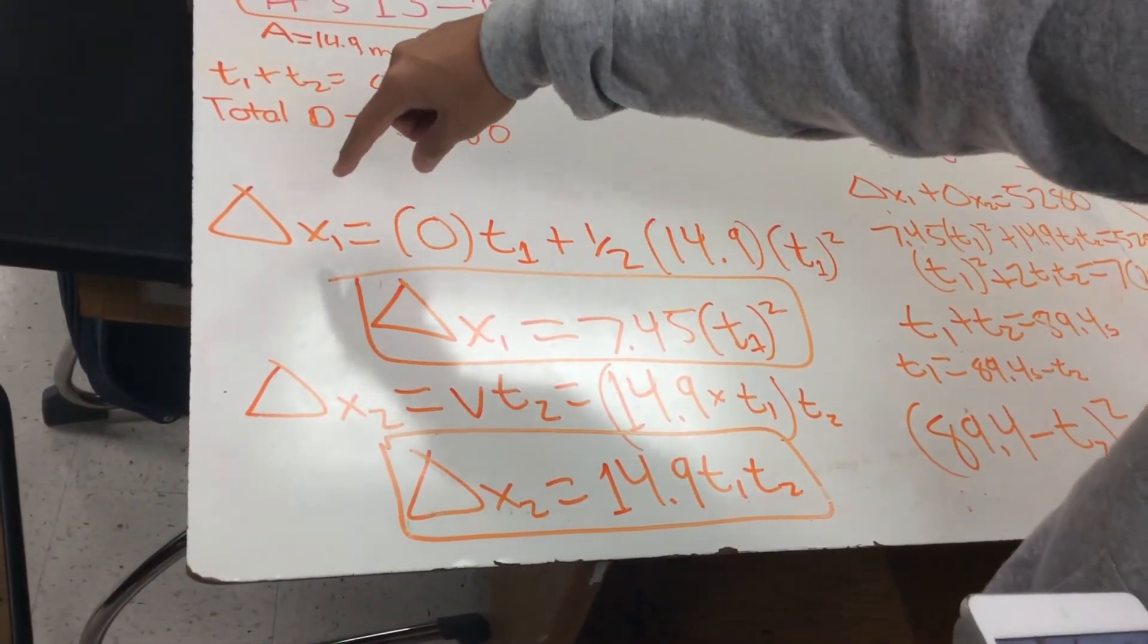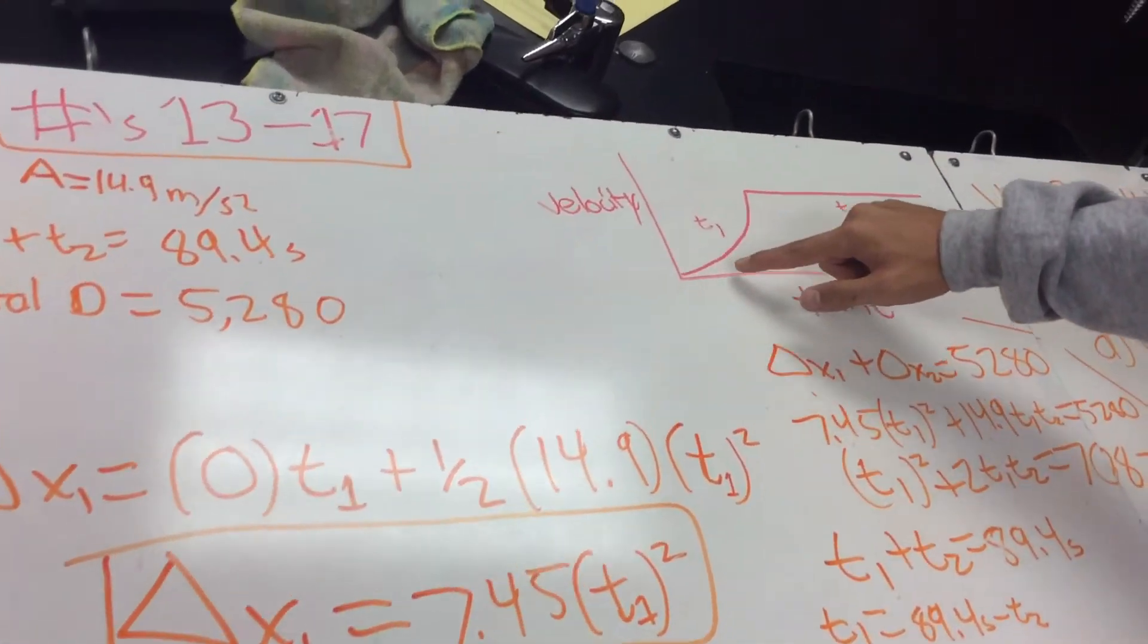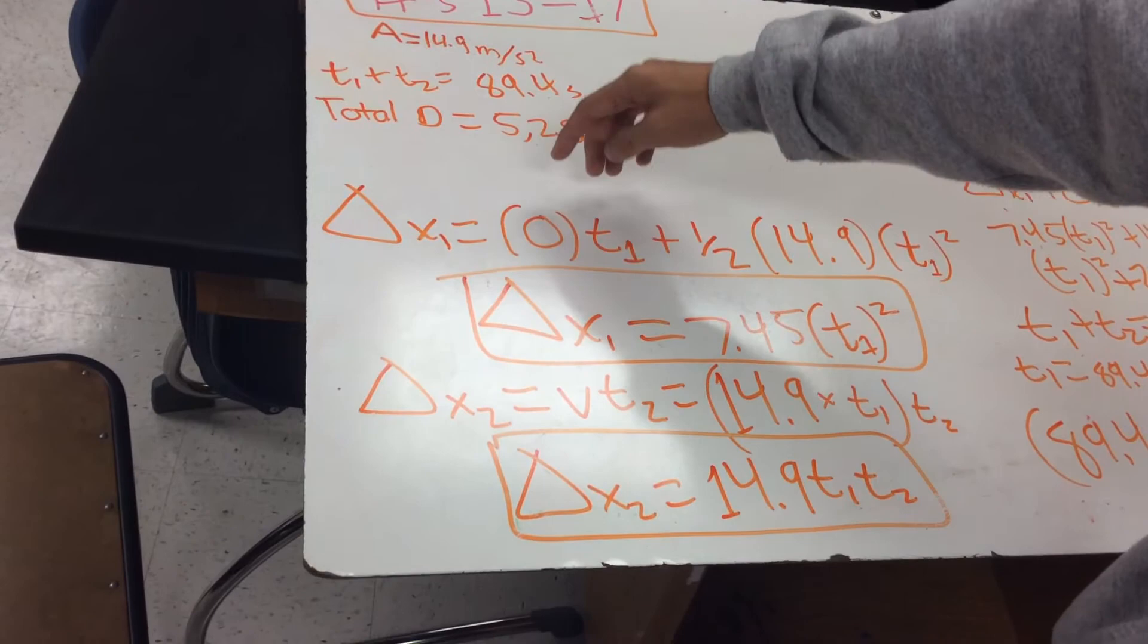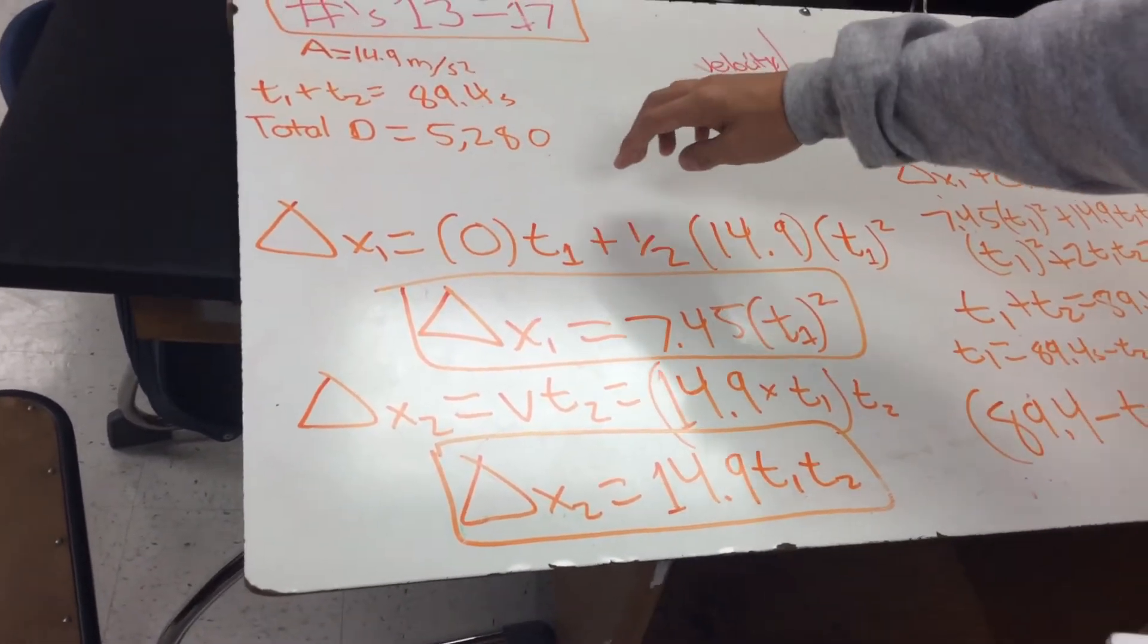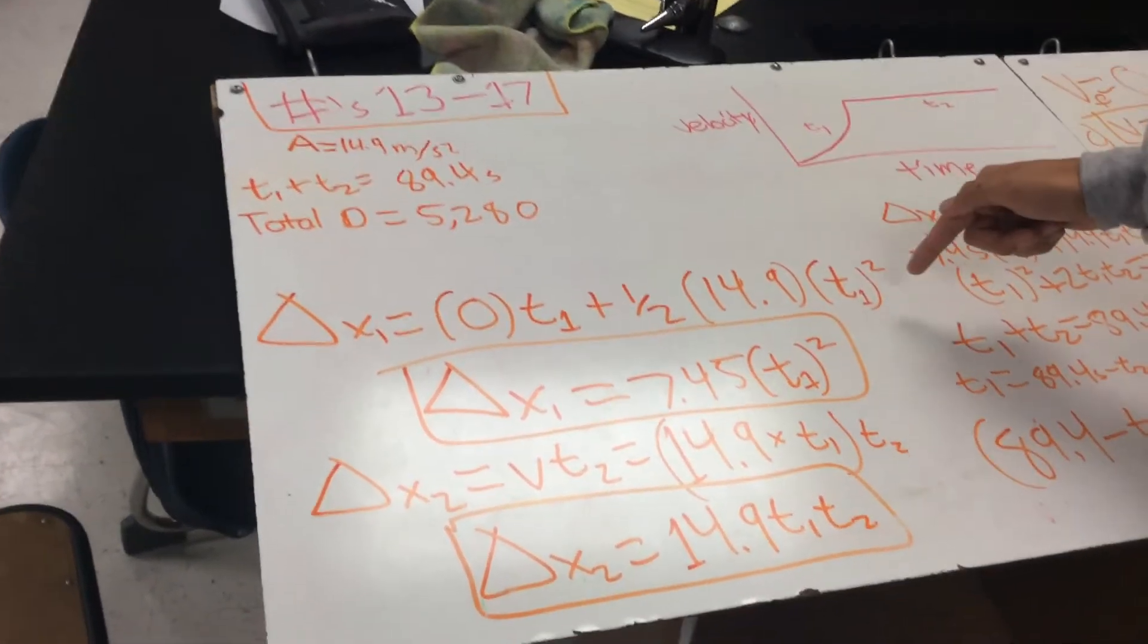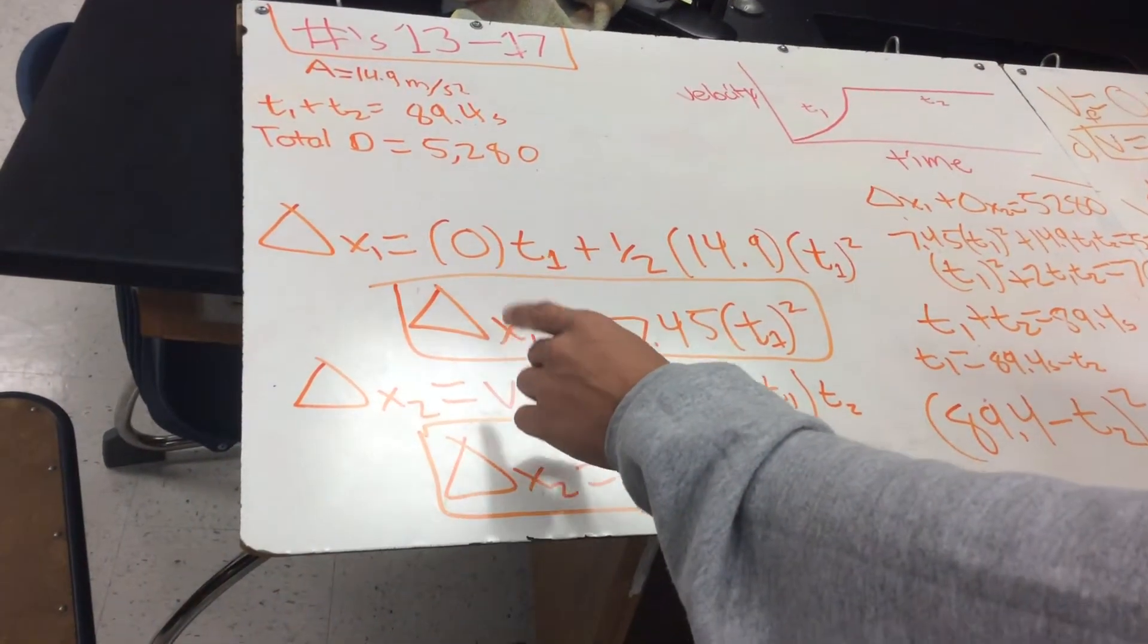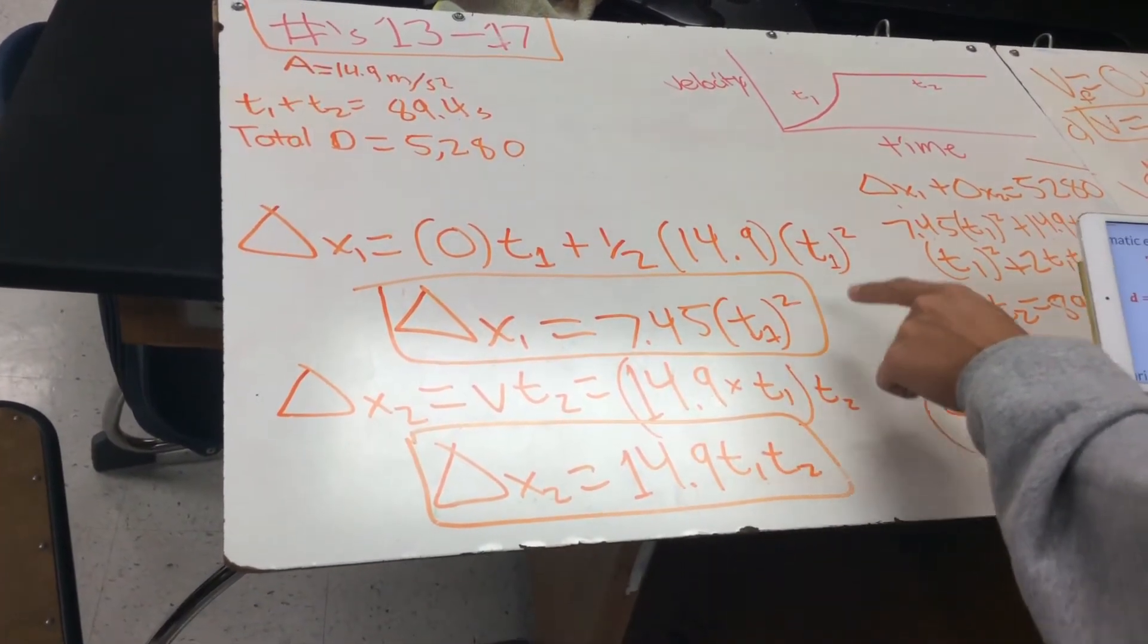So you'll get, so you're finding for the displacement, you're finding the displacement for this first part where it's accelerating. So you'll plug in the initial velocity. It starts at rest, so the initial velocity is 0 times time 1 plus one-half acceleration, 14.9 times time 1 squared. And when you simplify that down, you'll get delta x equals 7.45 times t1 squared.